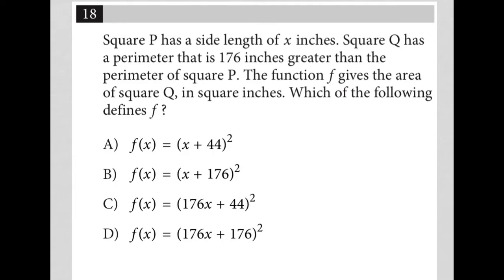So this question says square P has a side length of X inches. I'm going to just draw a square. It has a side length of X, which basically means every side is equal to X because that's what squares do. And this is square P, so I'll just put a P there.